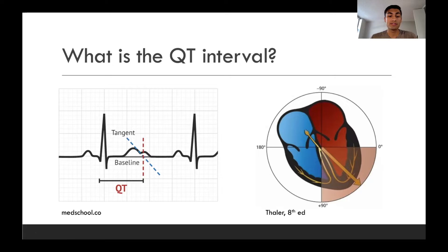But a commonly accepted way is through a method called tracing the tangent. And if we draw a tangent line on the end of the T wave, the point where it intersects with the baseline, that is essentially the endpoint for the QT interval. And what the QT interval is demonstrating is the cycle of depolarization and repolarization of the ventricles. And in a normal EKG, the QT interval should comprise just less than half of the total cycle, about 40%.